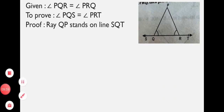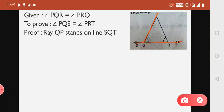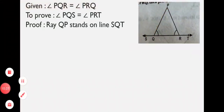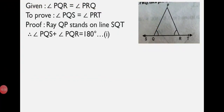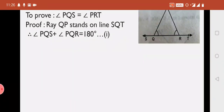For the proof, Ray QP stands on line SQT. You can see in the figure that two angles are formed: Angle 1 and Angle 2, which make 180 degrees. That is, Angle PQS plus Angle PQR equals 180 degrees by the Linear Pair Axiom. We label this as equation number 1.